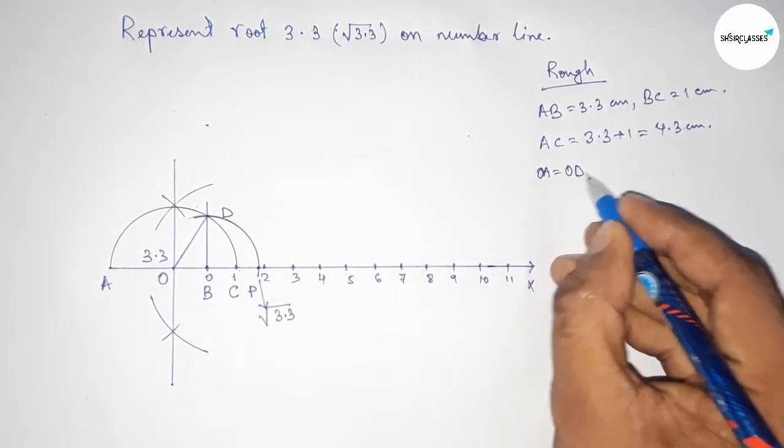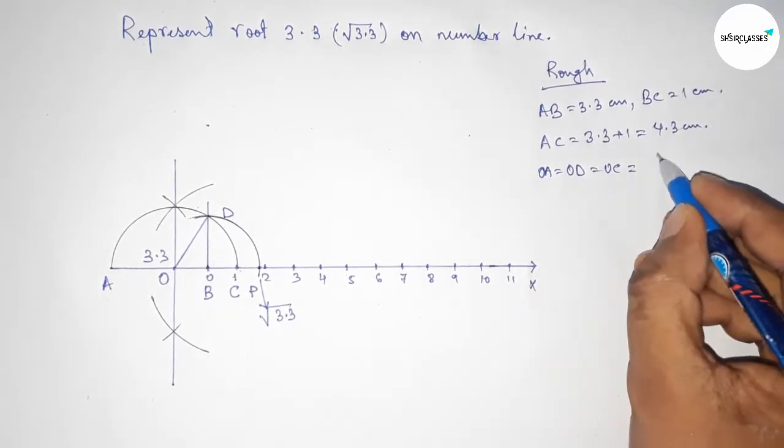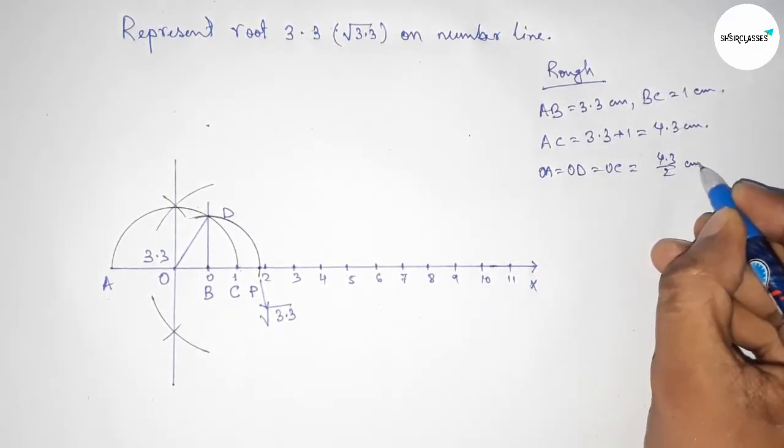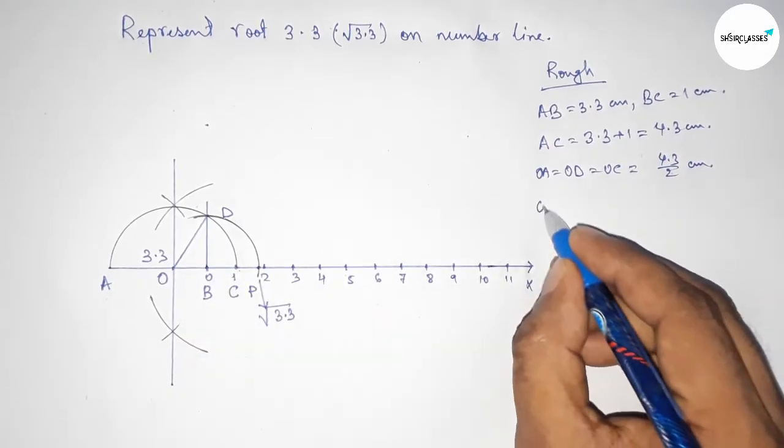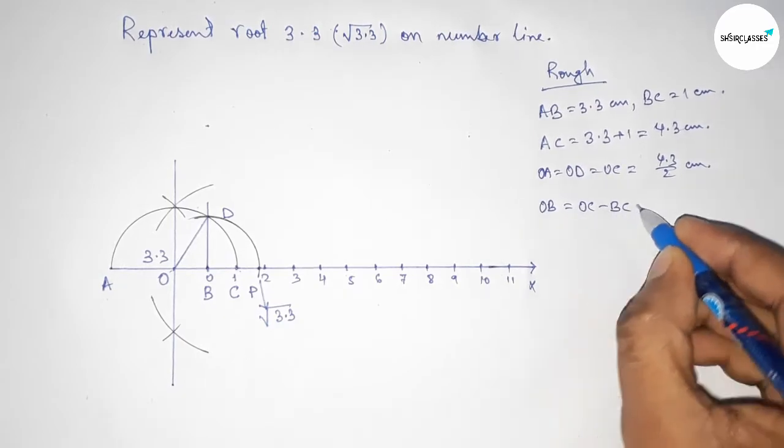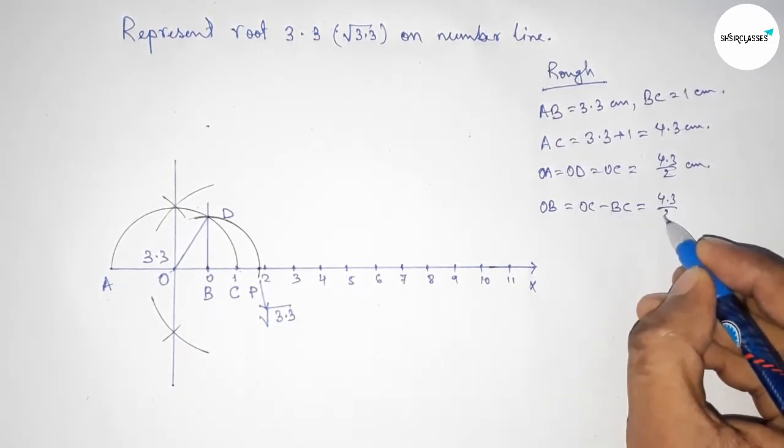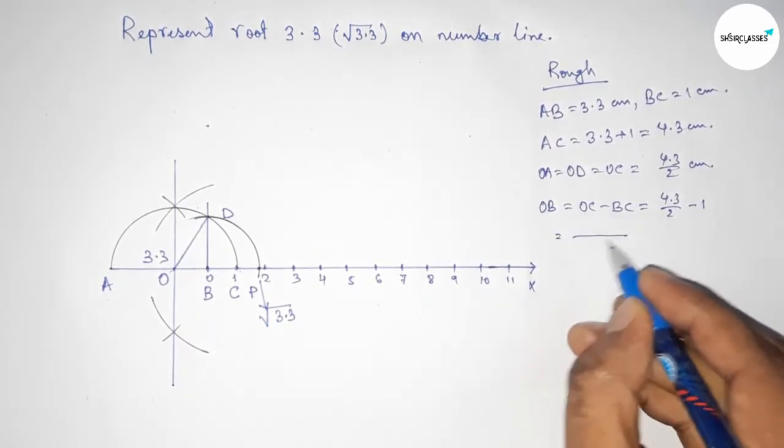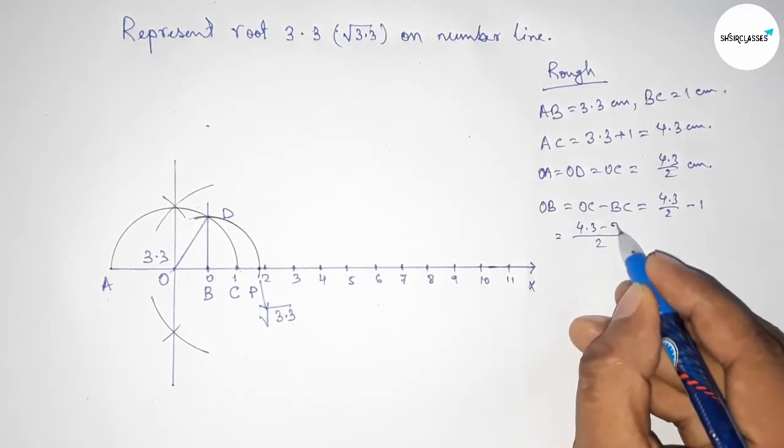Now the distance OB, we can write as OC minus BC. Putting the values of OC and BC and after calculating, this is 2.3 by 2 centimeters.